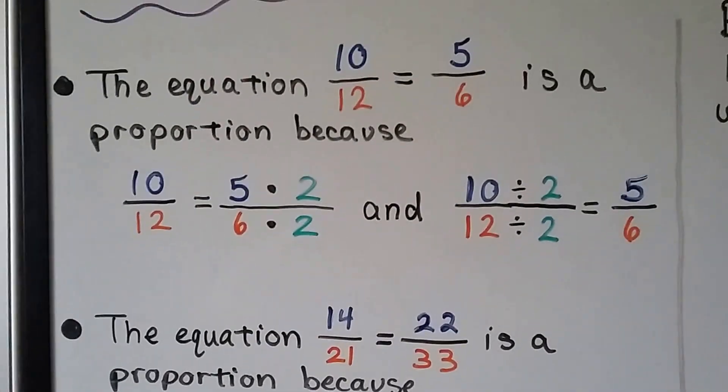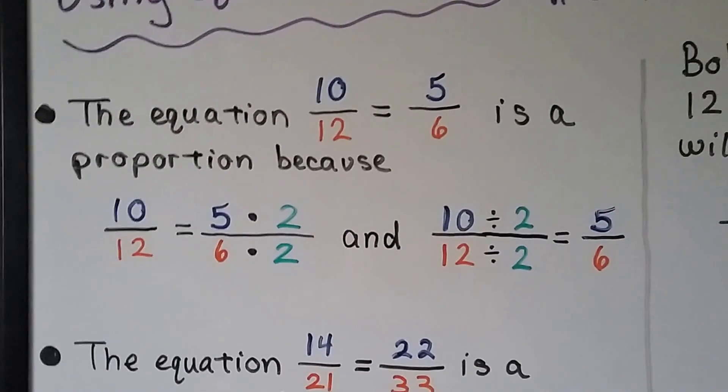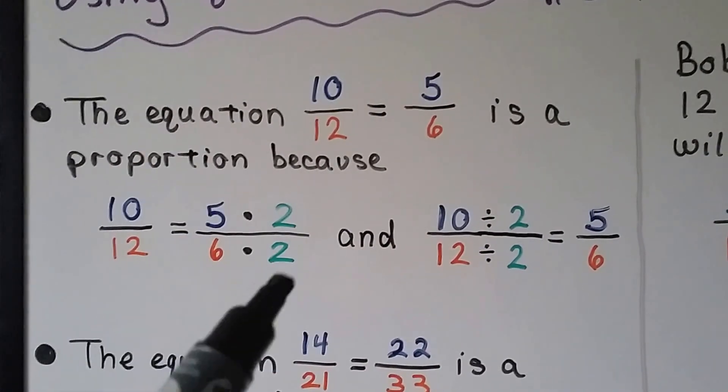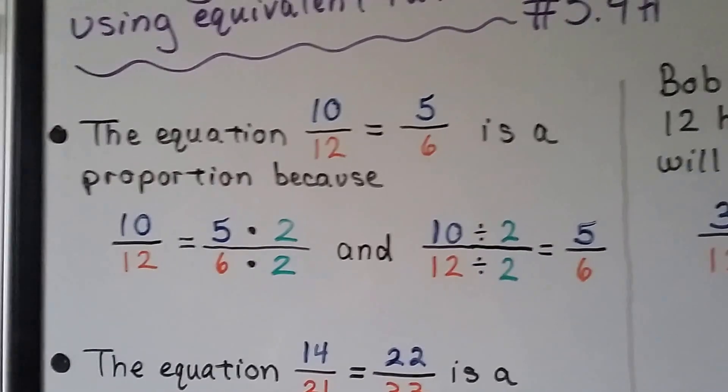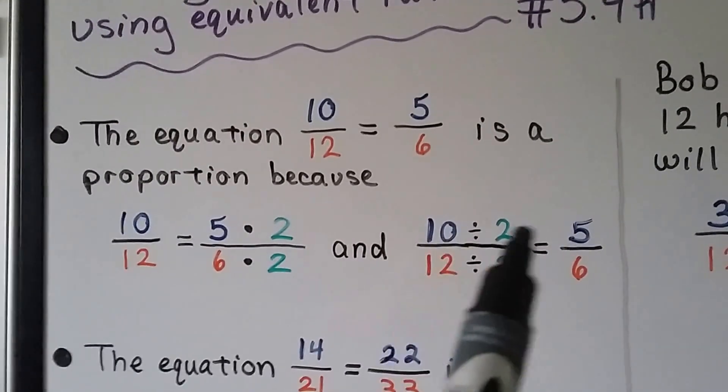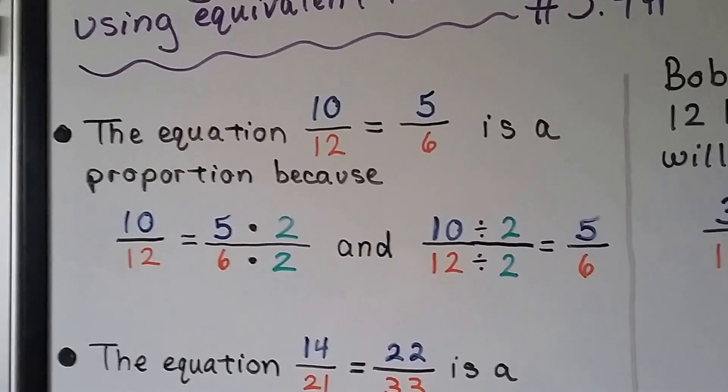The equation 10 twelfths equals 5 sixths is a proportion because we can multiply the 5 times a 2 and the 6 times a 2, the same number, and get 10 twelfths. We can also divide 10 by 2 and 12 by the 2, the same number, and get 5 sixths.